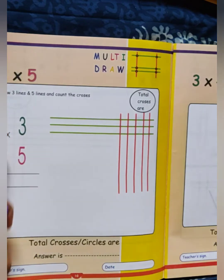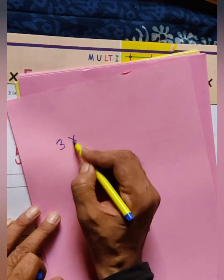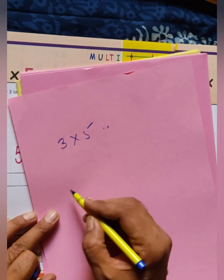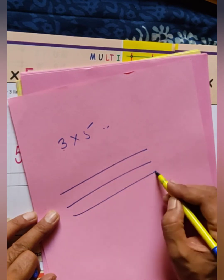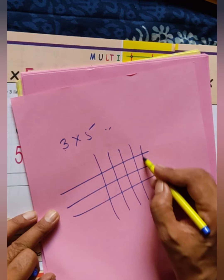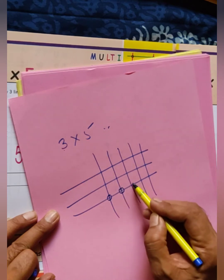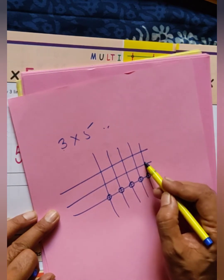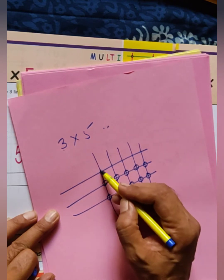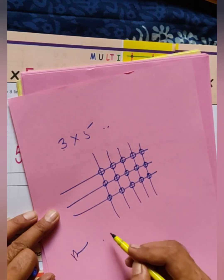Next question: three multiply by five. Draw three lines, then five lines like this. Now count the crosses: one, two, three, four, five, six, seven, eight, nine, ten, eleven, twelve, thirteen, fourteen and fifteen. So the answer is 15.